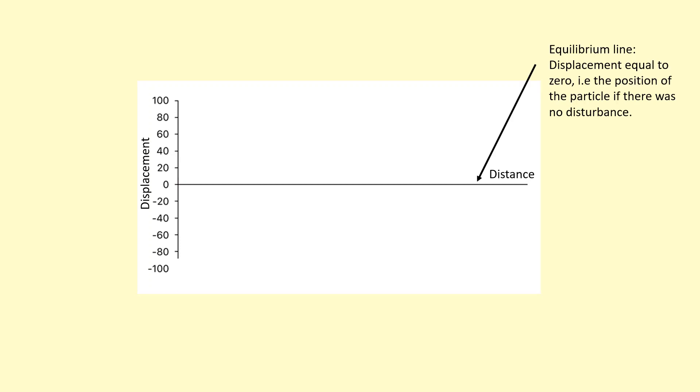This line here is called the equilibrium line, and particles along that line have zero displacement - that's where they'd be if there was no disturbance. In other words, if there was no wave traveling along, that's where the particles would come to rest.